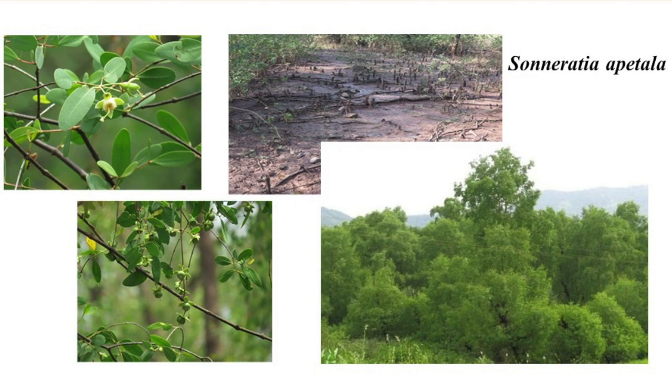Then Sonneratia apetala — this is again an important species. We can observe the beautiful flower of this plant in the image, and in another picture I have kept specifically to mention the disturbance through the species — the entire root system of this plant is open because of encroachment by human beings. Sonneratia apetala plays a similar role to Avicennia marina, helping in trapping pollutants from the aquatic and estuarine ecosystem.